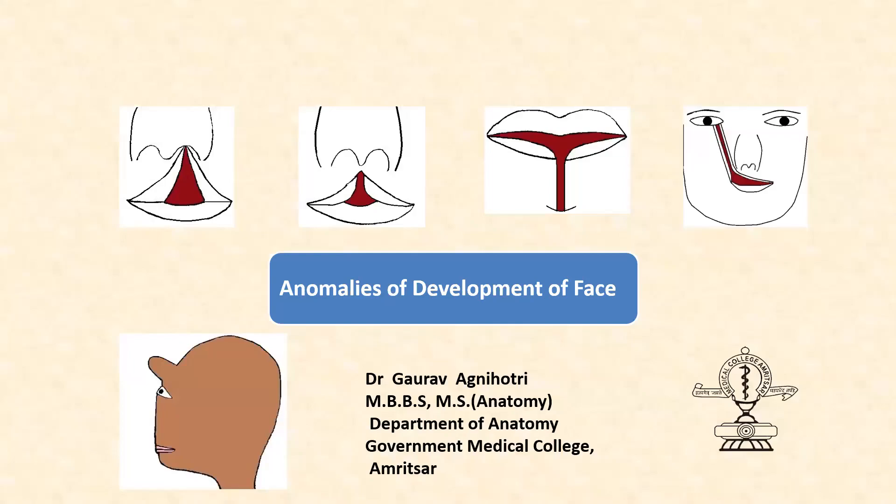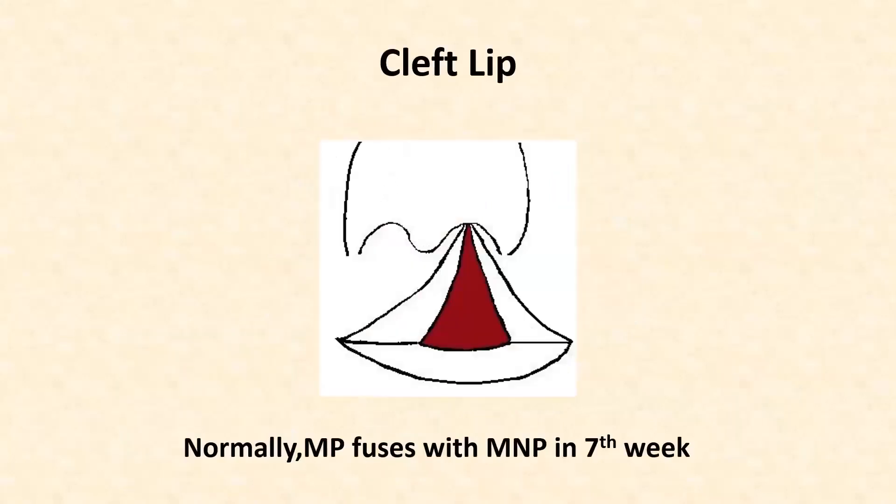Welcome to the class on anomalies of development of face. I'm Dr. Gaurav Agnihotri. Among the various anomalies of development of face, the most important I feel is cleft lip. The upper lip of a hare or rabbit normally has a cleft, and therefore this anomaly where the lip is split in humans is called cleft lip or hare lip.